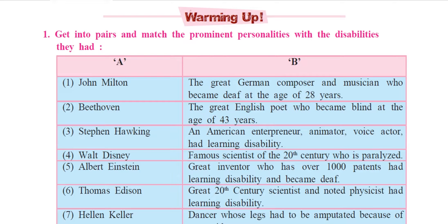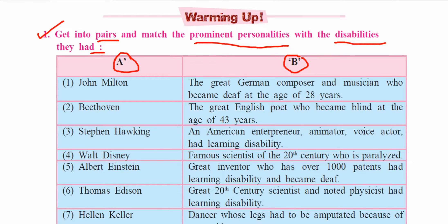The first activity question is: get into pairs and match the prominent personalities with the disabilities they had. Two columns are given — column A and column B. In column A, names of prominent personalities are given. In column B, certain disabilities as well as their inventions or some information related to these great personalities is given. We are going to match all these personalities to their correct match from column B.